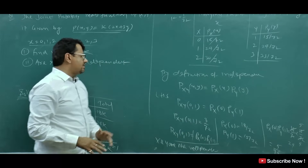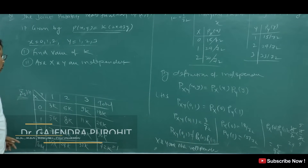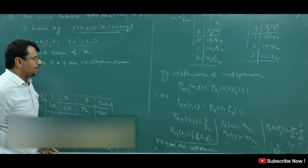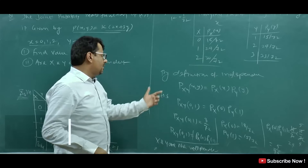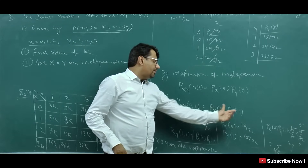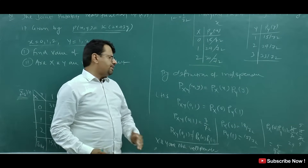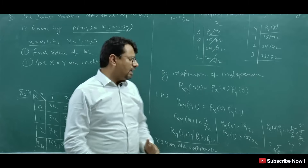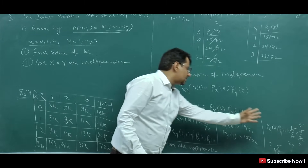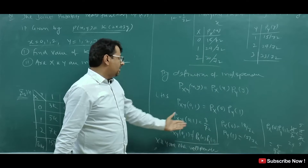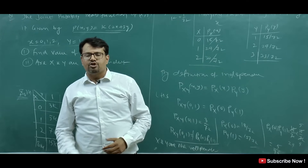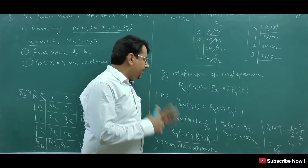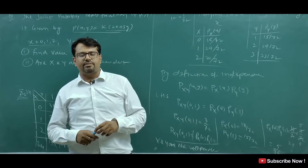You can also take another pair like X=0, Y=2 and check — the joint PMF and the product of marginal PMFs should be the same for independence. Since they are not the same, the product is different. So X and Y are not independent; they are dependent. This is how we solve these types of concepts.